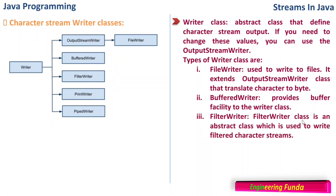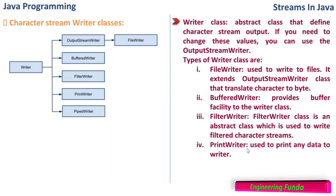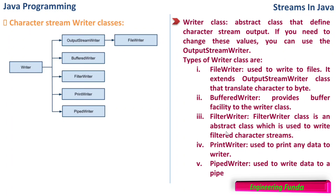FilterWriter is an abstract class used to write a filtered character stream — if you want to do some filtering before writing, you use FilterWriter. PrintWriter is used to write or print any data to the Writer. PipedWriter is used to write data to a pipe — if there is a pipe through which communication is happening with a continuous flow, we use PipedWriter.